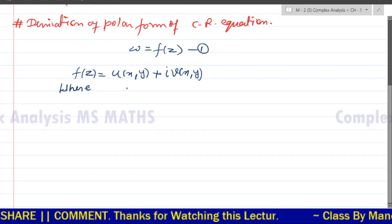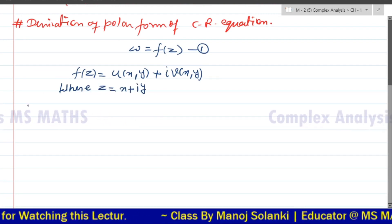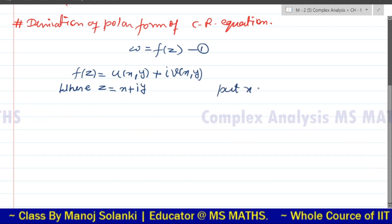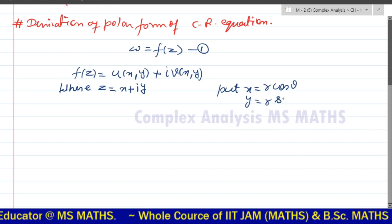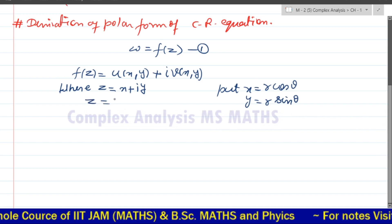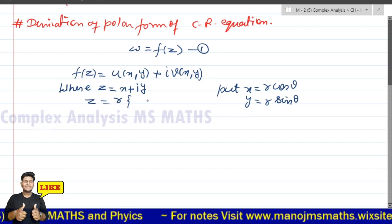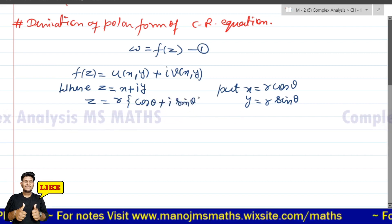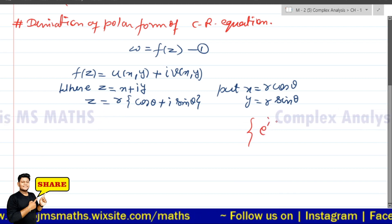Where z is equal to x plus iota y. Now we have to put the transformation: x is equal to r cos theta and y is equal to r sin theta. So z becomes r times (cos theta plus iota sin theta).